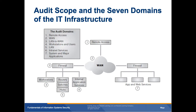The audit scope deals with the seven domains of the IT infrastructure: remote access, wide area networks, the LAN-to-WAN domain, workstations and users, the actual local area network, intranet services, internal services to the organization, systems, and major applications.